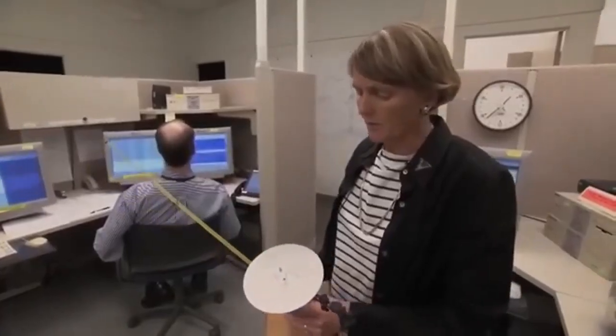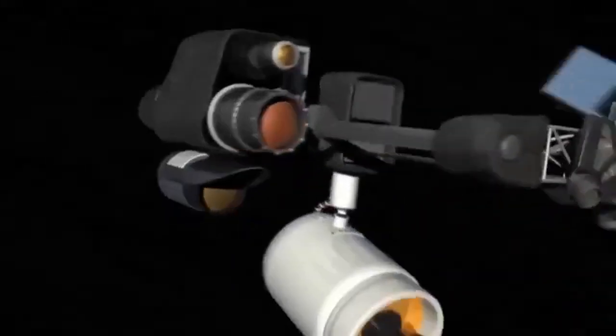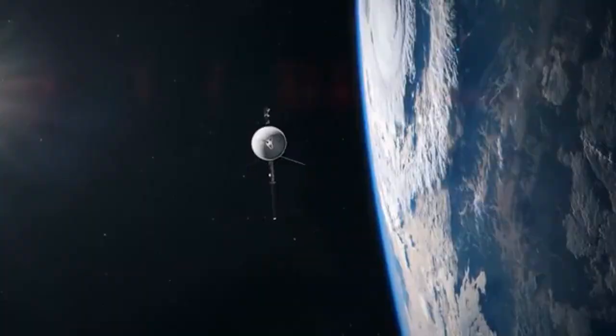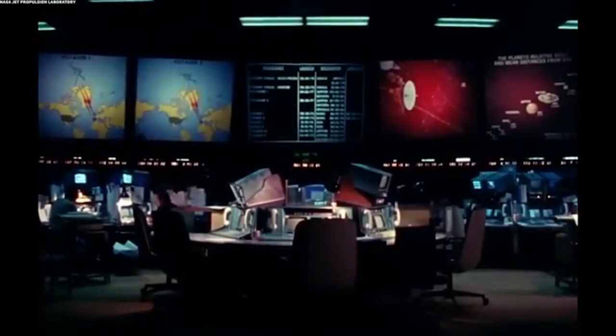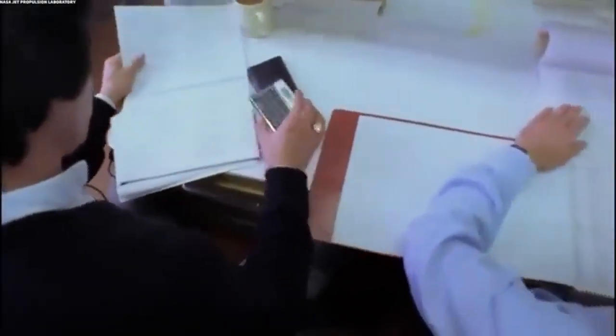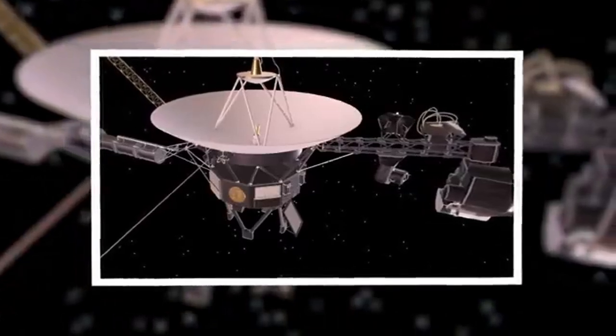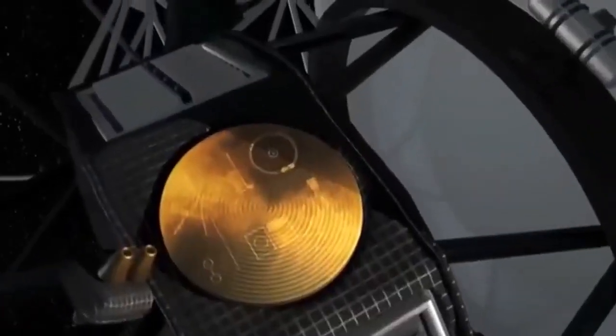Voyager 1's continued operation is a marvel of engineering and careful mission planning. The spacecraft is powered by radioisotope thermoelectric generators, RTGs, which convert the heat released by the decay of plutonium-238 into electricity. This power source has allowed Voyager 1 to operate far from the sun, where solar panels would be ineffective. However, the power output of the RTGs decreases over time, necessitating careful management of the spacecraft's systems to conserve energy.